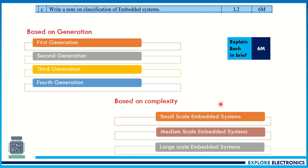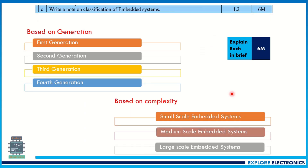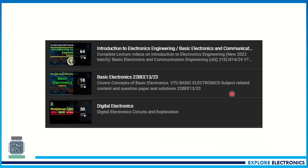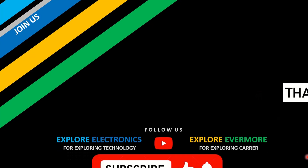This completes the eighth question. This is how you can get questions in the embedded systems chapter. You can easily predict questions on the core or block diagram of embedded systems, differences between microprocessor and microcontroller, RISC and CISC, general purpose systems and embedded systems, applications, transducers, and sensors. These are the playlists you can visit to read more content on embedded systems. Thank you. In the next video, let us see Module 5 questions in the model paper.